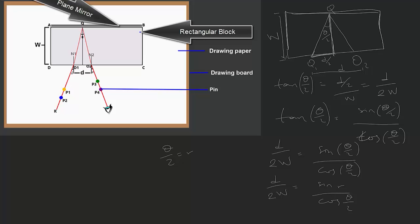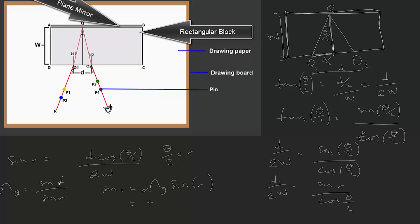We also know that tan(theta/2) equals sin(theta/2) divided by cos(theta/2). So substituting tan(theta/2) as D over 2W gives us sin(theta/2) over cos(theta/2). Now we know theta/2 equals R1, so replacing that: D over 2W equals sin(R1) divided by cos(theta/2). Making sin(R1) the subject gives sin(R1) equals D cos(theta/2) divided by 2W.